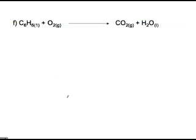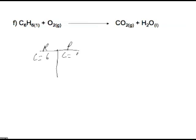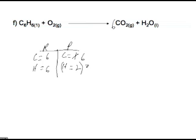Let's look at another combustion problem, but this one is a little different. We have our grid with our reactant side and product side and go through each atom. Carbon is equal to 6 on the reactant side, and 1 on the product side — the common denominator between 6 and 1 is 6, so I place a 6 here. Hydrogen is equal to 6 on the reactant side, and 2 on the product side. The common denominator between 6 and 2 is 6, so I multiply times 3 — 3 times 2 gives me 6 — and place a 3 in front of H2O. I have 6 hydrogens on both sides.